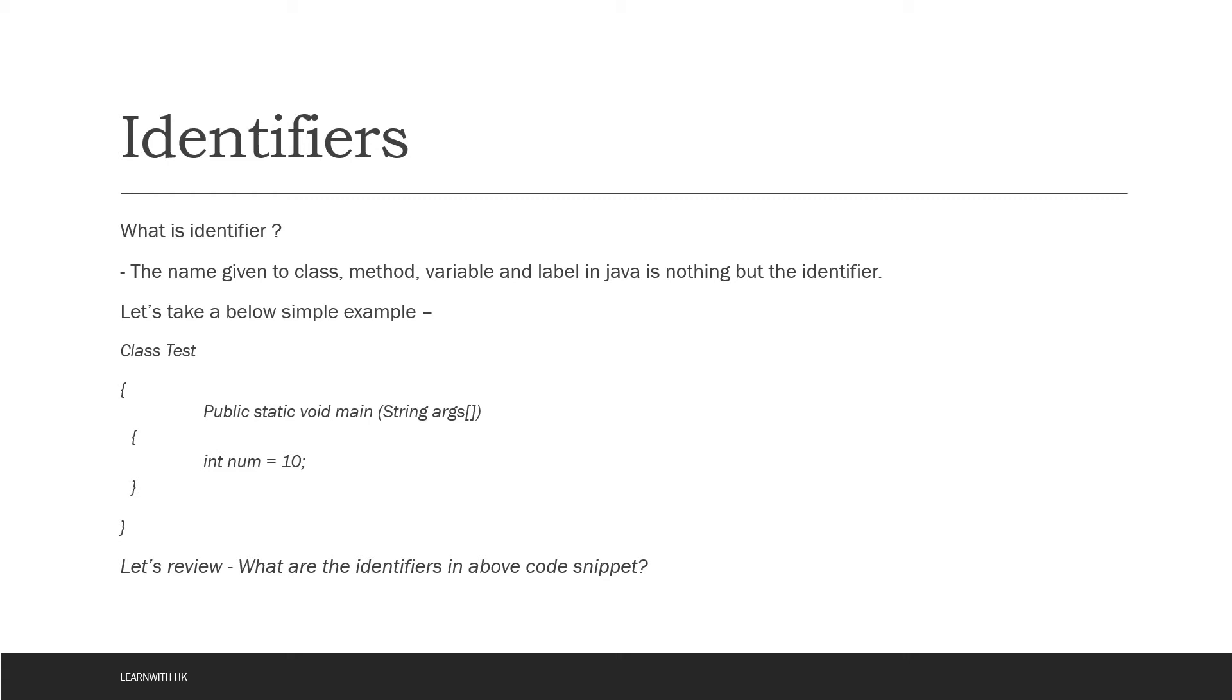So let's take an example of a Java class and try to figure out what are the identifiers used in this Java class. This is a very basic Java class. I'm not doing any actions, just declaring a sample Java class and a simple variable.